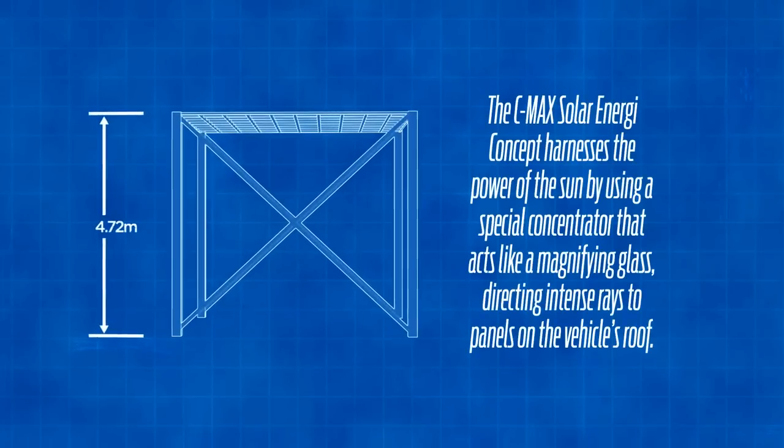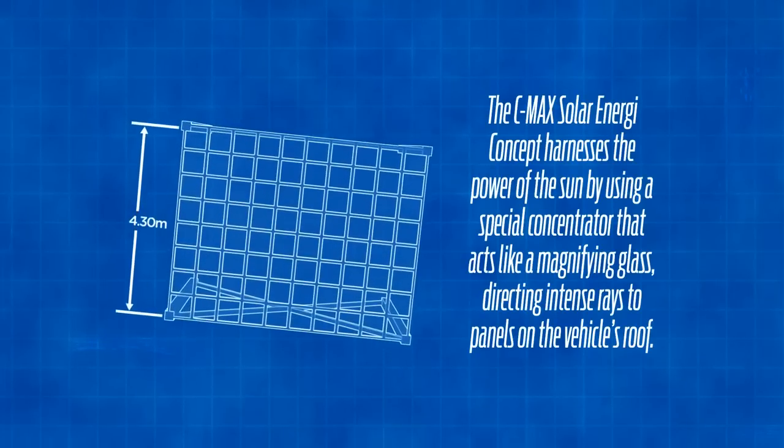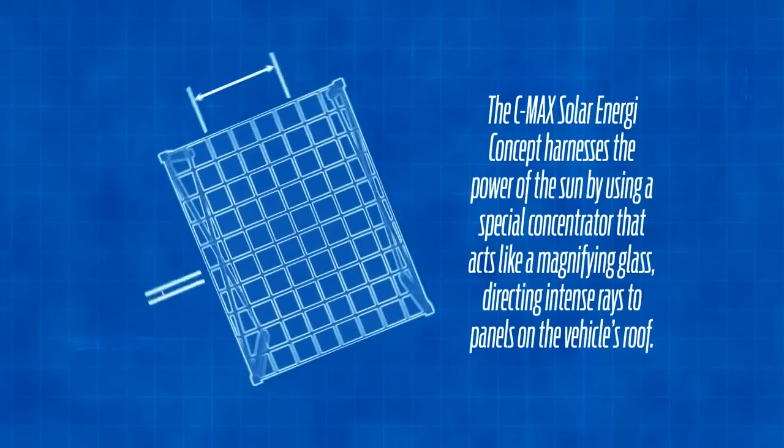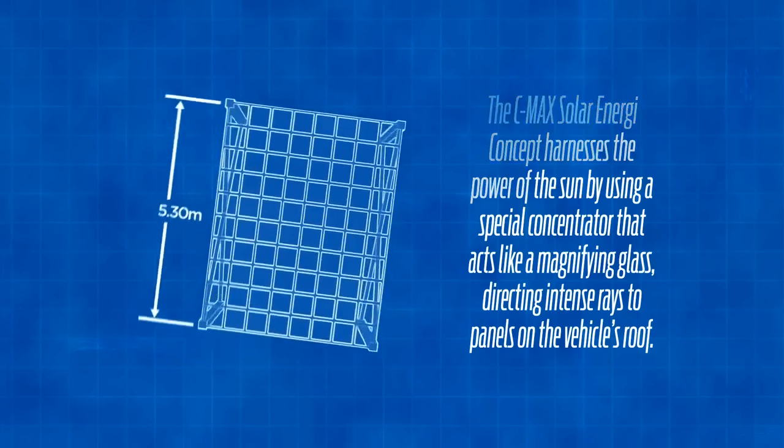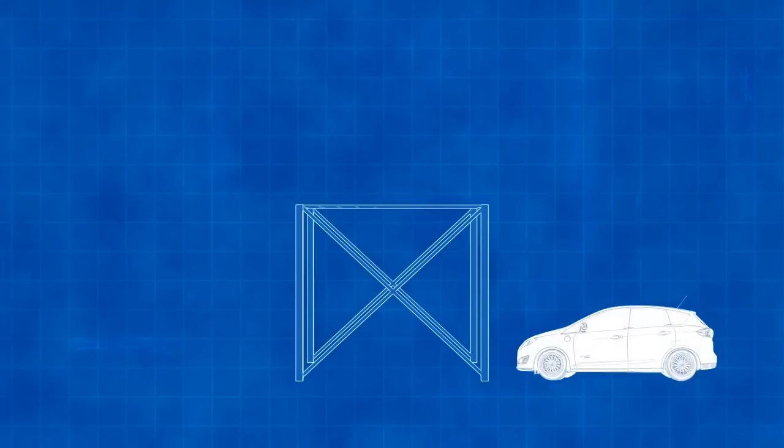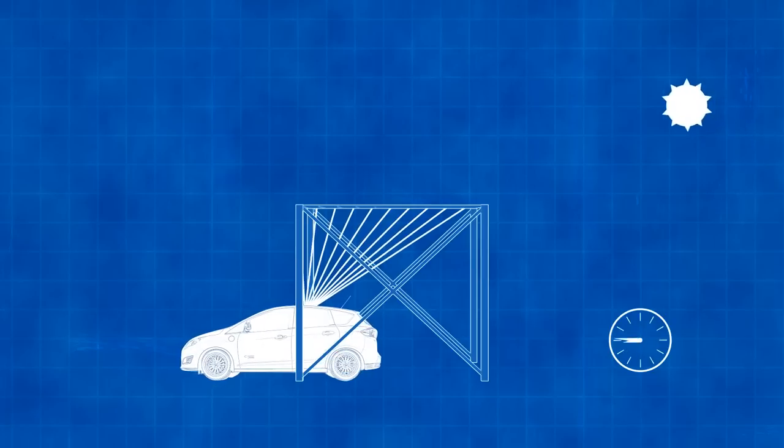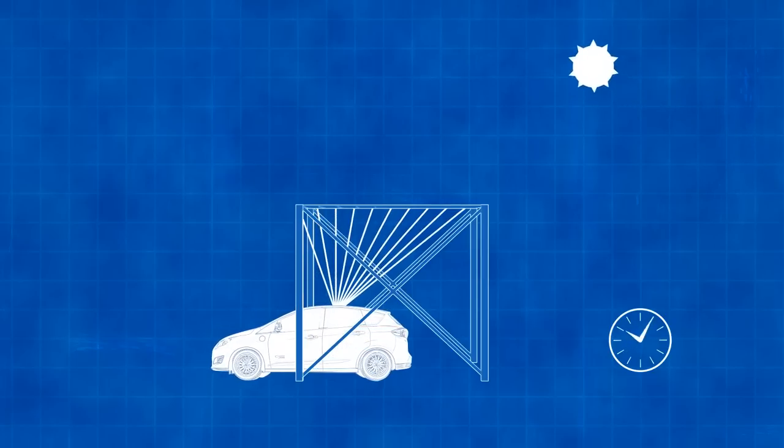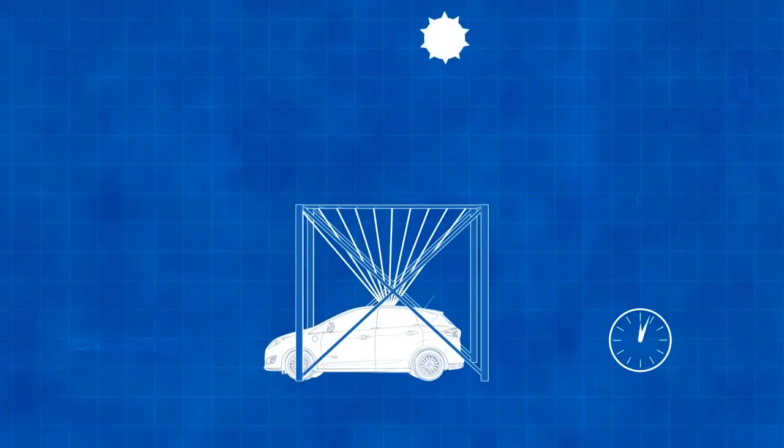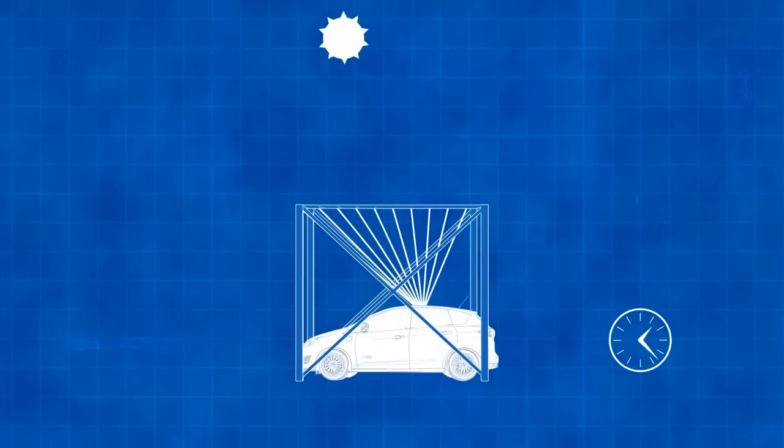We're proposing a static canopy of nothing more than what we call a Fresnel lens. It's acrylic so it's a very low-cost canopy. But the vehicle itself, as the sun traverses the sky from east to west, the vehicle will essentially move in the opposite direction and always keep that solar energy concentrated on the roof of the vehicle.